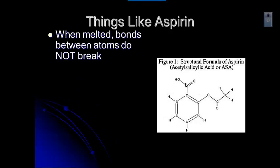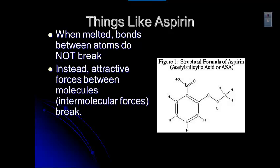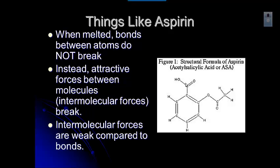When you melt things like aspirin, the bonds between the atoms don't break — covalent bonds are really strong. What typically happens is the attractive forces between the molecules break. We call those intermolecular forces — 'inter' means between. Those attractive forces break and the molecules can slide past each other. Intermolecular forces are really weak compared to bonds, so it just doesn't take a whole lot of energy to break them. That's why they were the first ones to melt and why they have really low melting points.